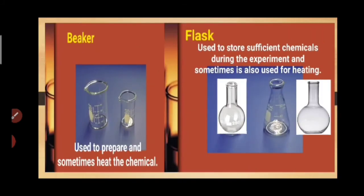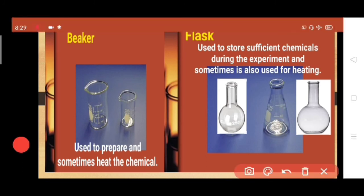The beaker is used to prepare and sometimes heat chemicals, and is available in various sizes. The next one is the flask, used to store sufficient chemicals during experiments and sometimes for heating. The first type is the round bottom flask with a round base, the second is the conical flask with a cone-like shape, and the third is the flat bottom flask with a flat base.